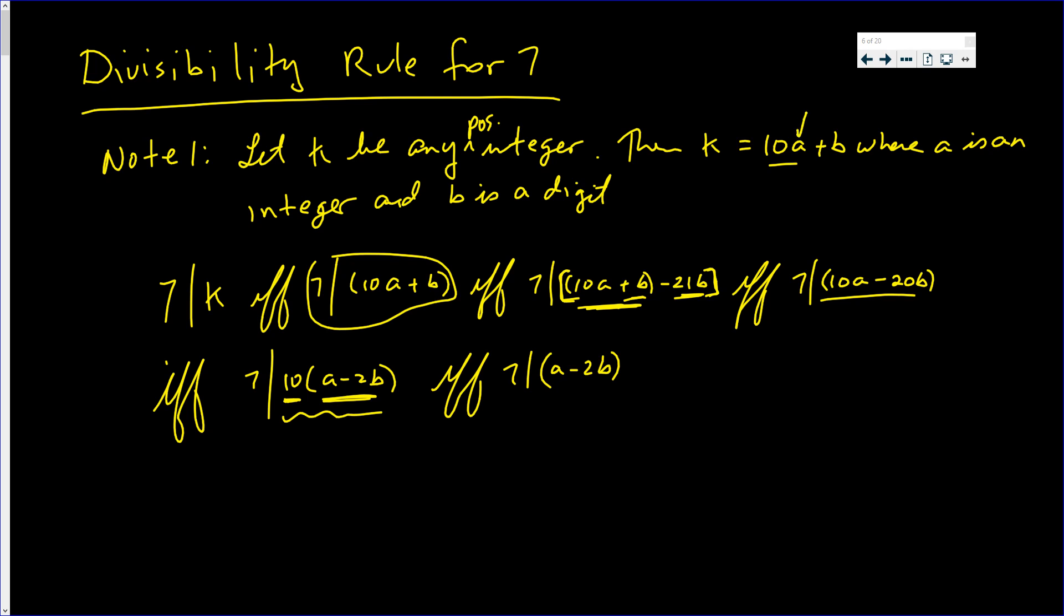If you take a and you take away 2 times b, if 7 goes into that, then 7 goes into the original number.